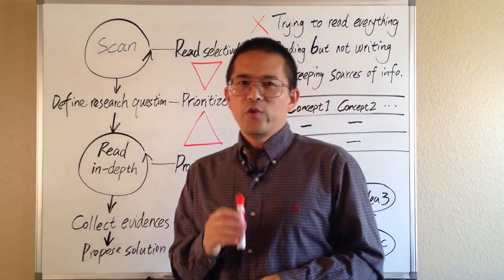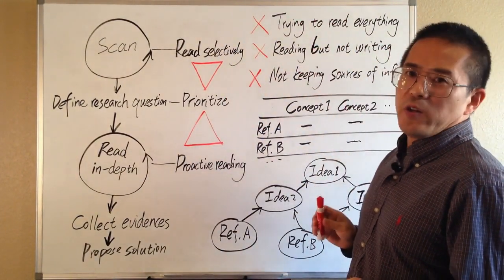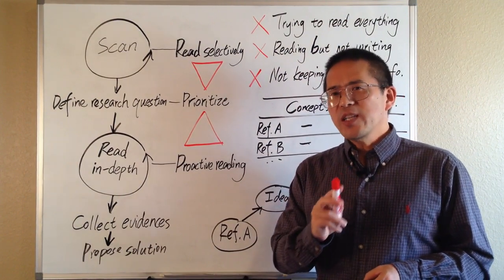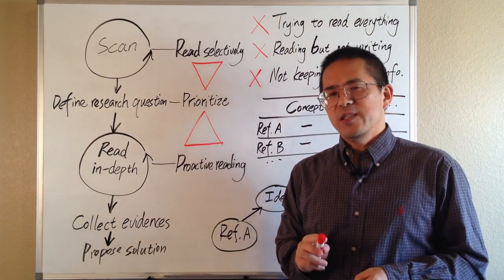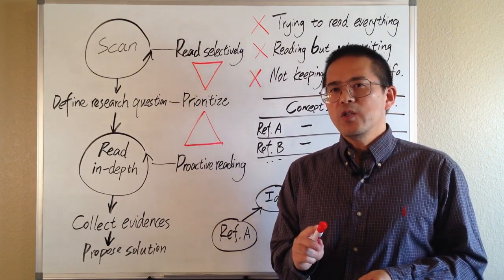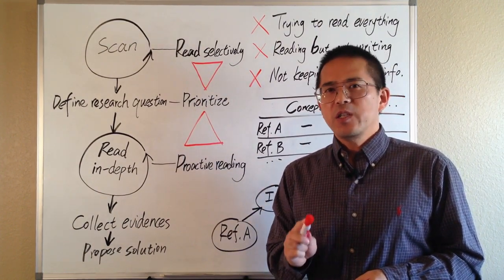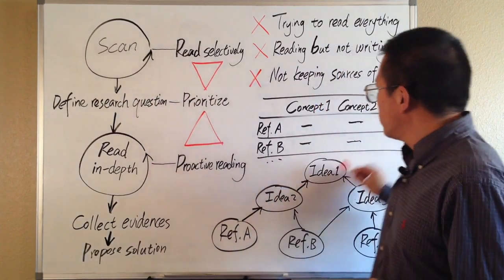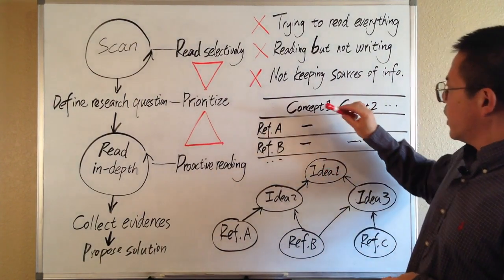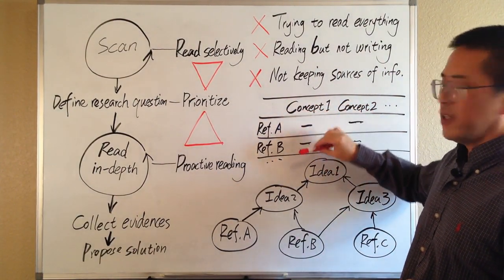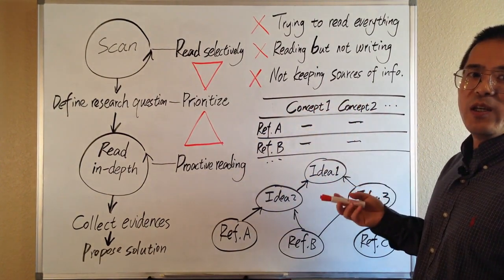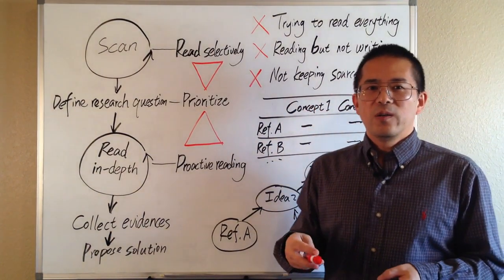Those are the three traps you definitely want to avoid. While reviewing and taking notes, in order to better organize your ideas, there are three tips you may want to consider. The first tip is to use a table. A table is a good way to summarize results, especially for a large number of references. A table like this will make it easier for comparing concepts or ideas from different studies. The concepts here may also include research methods or results on certain issues.